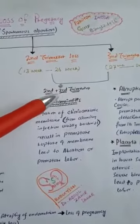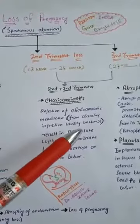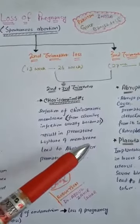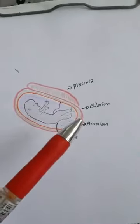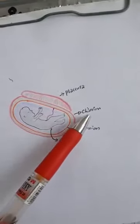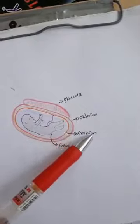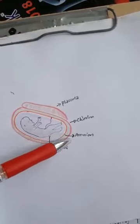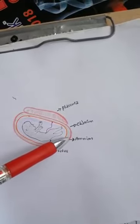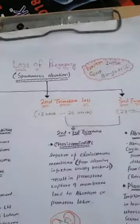In the second and third trimester, loss of pregnancy occurs because of chorioamnionitis — infection of the chorioamniotic membrane from ascending bacterial infection. This results in premature rupture of membrane and leads to abortion or premature labor. As you can see here, the fetus is surrounded by two membranes: the outer is the chorion — a placental membrane — and the inner is the amnion, a fetal membrane. Together this is the chorioamniotic membrane, surrounding the amniotic fluid and fetus.